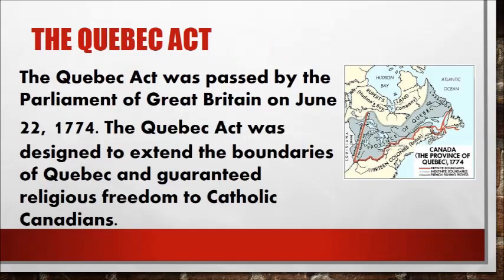When Britain took control of Canada, it wanted the colony to be British, yet to avoid rebellion, it knew it had to recognize the rights of French Canadians. The Quebec Act was passed by Parliament of Great Britain on June 22, 1774, and went into effect on May 1, 1775. The Quebec Act was designed to extend the boundaries of Quebec and guaranteed religious freedom to Catholic Canadians.